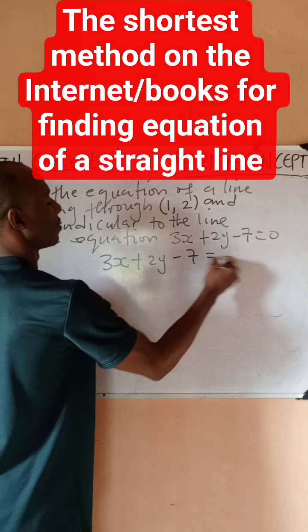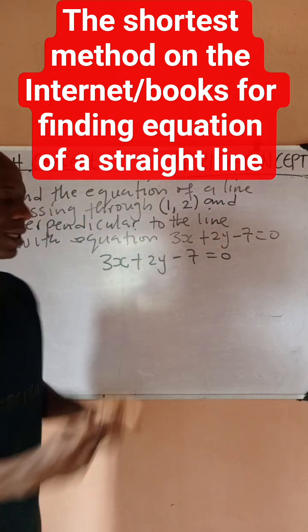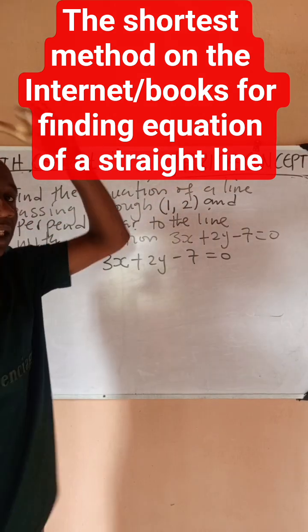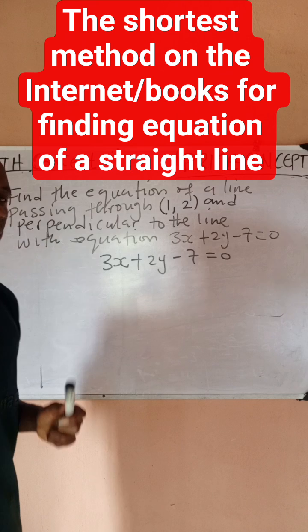So this is a line which has equation 3x + 2y - 7 = 0. I want to find the equation of another line that passes through this point and that line is going to be perpendicular to this line. A simple way to solve this is to understand that the equation of that line perpendicular to this would have a similar equation by just interchanging their coefficients and changing the sign at the center.